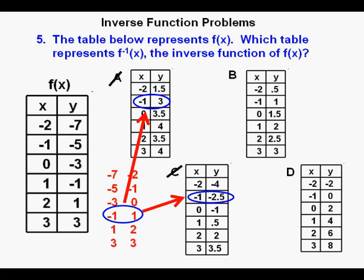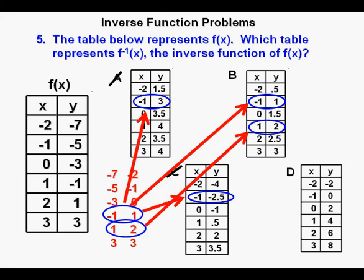Now for the table in B. We do have (-1, 1), and that matches. We also have (1, 2) in the red table. That matches the (1, 2) in the B table. And finally, we also have (3, 3) in the red table that matches the (3, 3) in the B table.